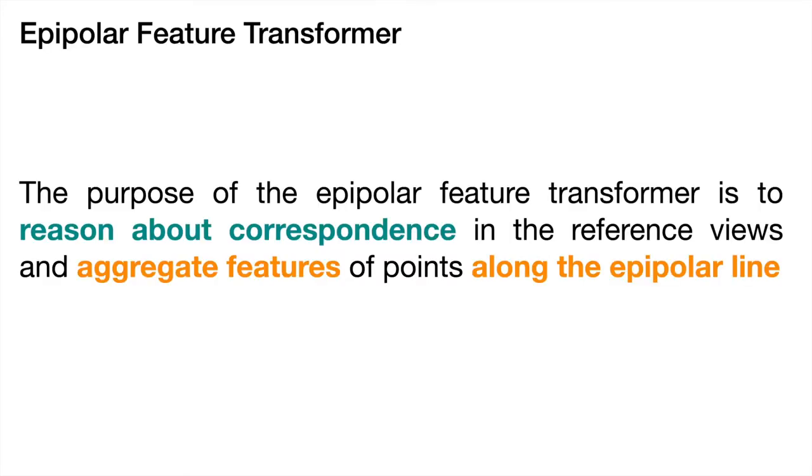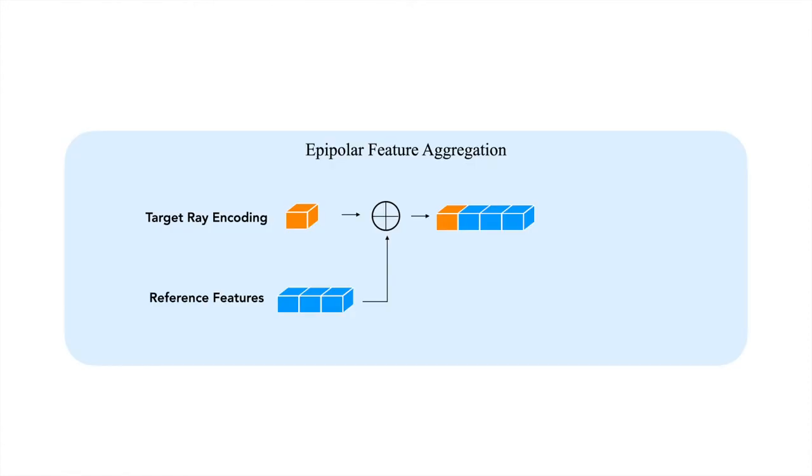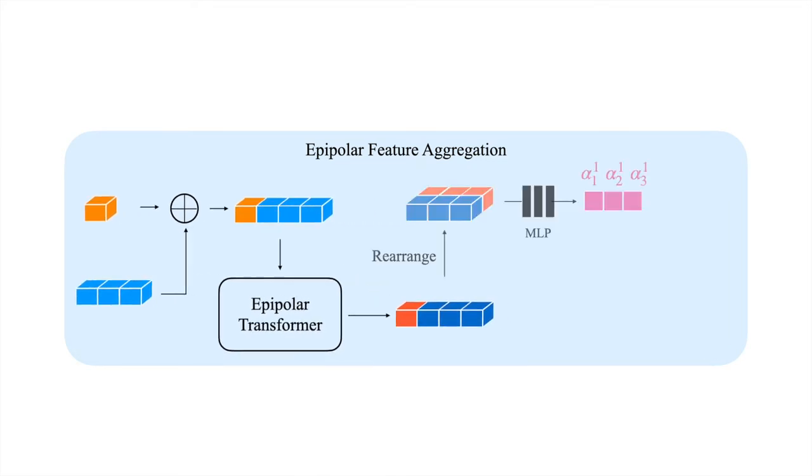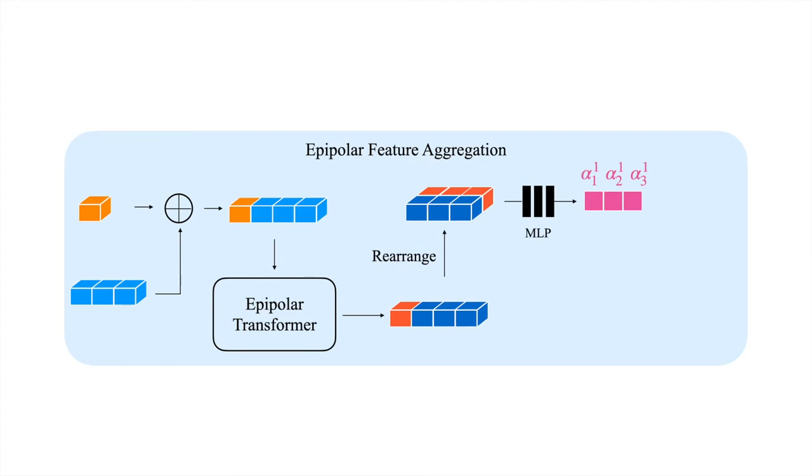At the core of the epipolar feature aggregator is the epipolar feature transformer. The purpose of this transformer is to reason about correspondences in the reference views to aggregate features of points along the epipolar line. Given the target ray representation and the epipolar point features, we first concatenate them to form a sequence that acts as input to the transformer. The refined features from the output of the transformer are used to estimate pairwise attention weights between each epipolar point and the target ray. These weights, denoted by alpha, are then used to obtain a weighted sum of the epipolar features.